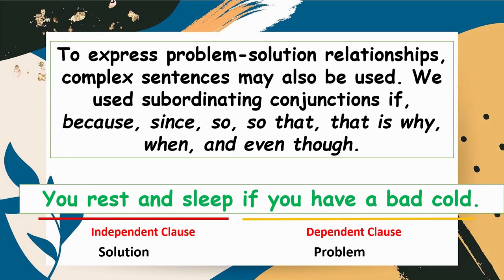We can also use subordinating conjunctions if, because, since, so, so that, that is why, when, and even though to express problem-solution relationships using complex sentences. For instance: 'You rest and sleep if you have a bad cold.' The problem in the sentence is 'if you have a bad cold,' and the solution is 'you rest and sleep.'